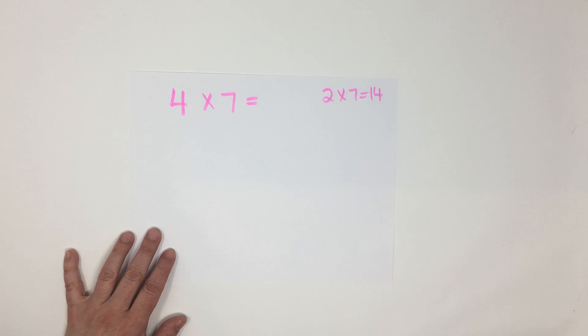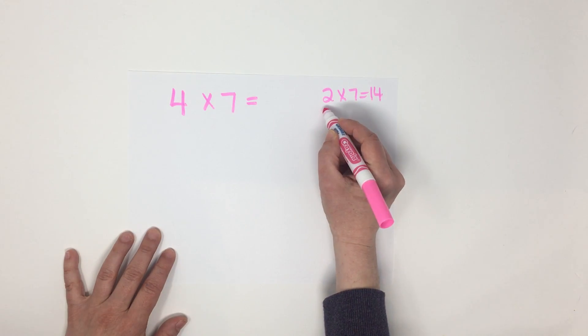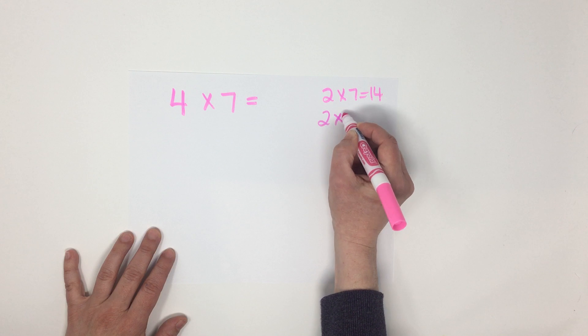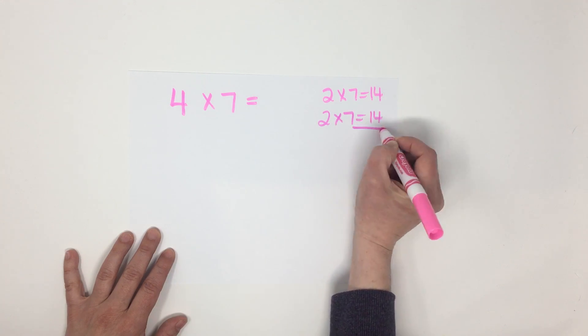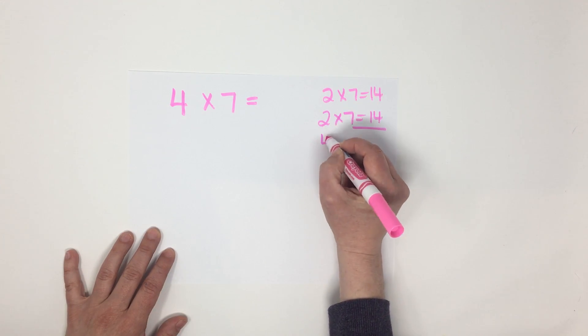So, if I needed to know what 4 times 7 was, I'd just have to get the double of that. Because I'd have 2 times 7 equals 14 again. And 2 and 2 is 4, so that would be 4 times.